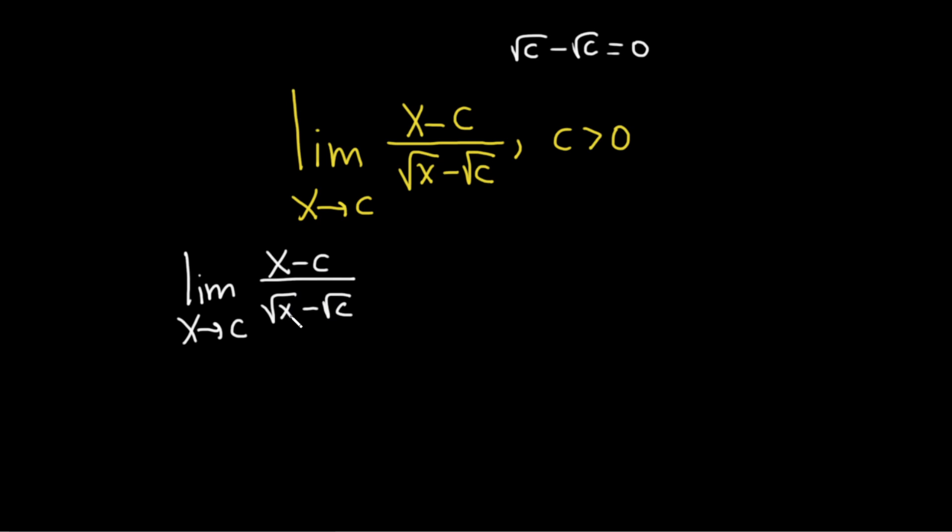So basically whenever you have something like this with square roots, you want to multiply it by the conjugate. So the conjugate of this would be the square root of x plus the square root of c. You just flip the sign and do the same thing here, just like that.